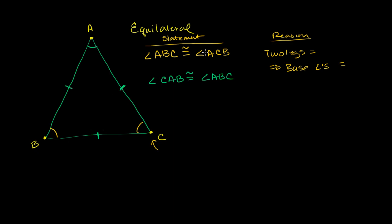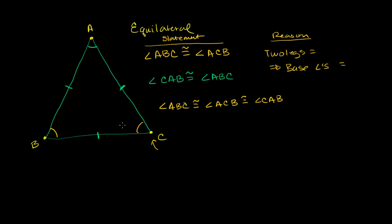If angle ABC is congruent to angle ACB and it's congruent to angle CAB, then all of these angles are congruent to each other. So angle ABC is congruent to angle ACB, which is congruent to angle CAB. That pretty much gives us all of the angles. So if you have an equilateral triangle, it's actually an equiangular triangle as well — all of the angles are going to be the same.